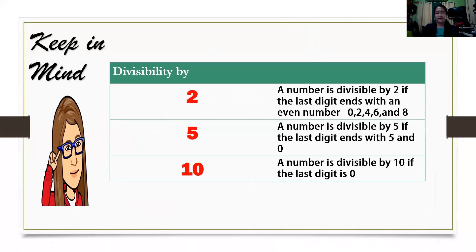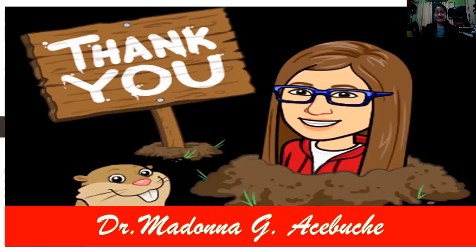Keep in mind: Divisibility by 2 — a number is divisible by 2 if the last digit ends with an even number: 0, 2, 4, 6, and 8. A number is divisible by 5 if the last digit ends with 5 or 0. Divisibility by 10 — a number is divisible by 10 if the last digit is 0. I hope you learned something today. This is Mama Do. Thank you, and see you again.